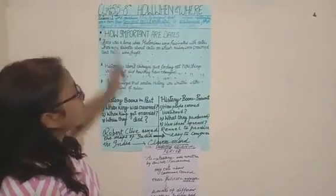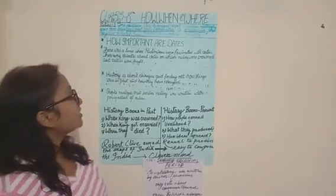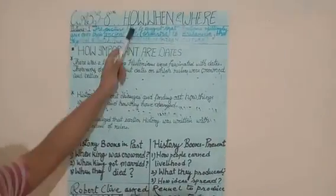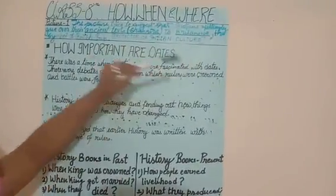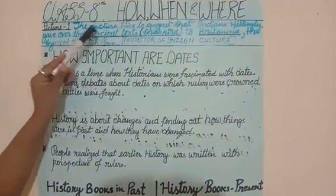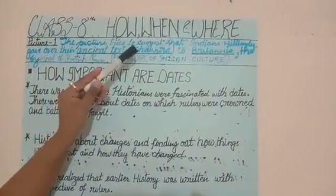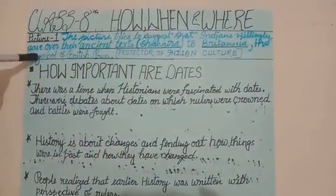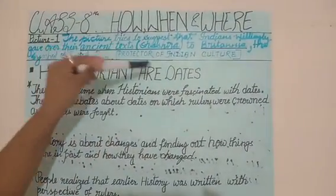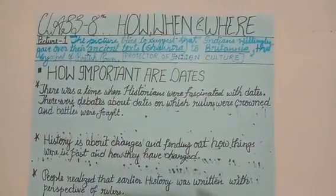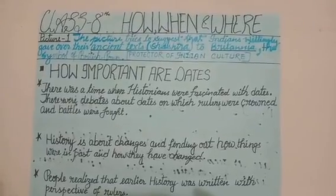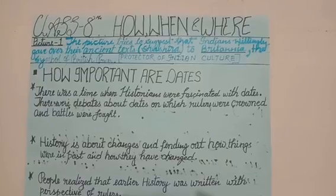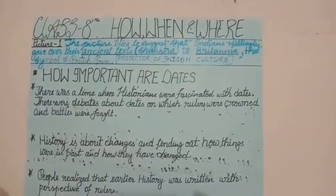In the first picture of your NCERT book, you can see that the image tries to suggest that the Indians willingly gave over their ancient texts, Shastras, to Britannia — the symbol of British power. They wanted to show that they are the protectors of Indian culture.